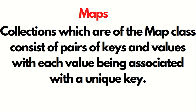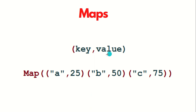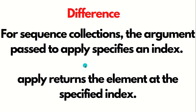Last is maps. Maps are a very common data structure. Maps contain collections of the map class which consist of pairs of keys and values, with each value being associated with a unique key. Maps are not a new thing — we have seen this maps concept in the case of Java, in the case of Hadoop. Key-value pairs are again a part of Scala. We have a key and we have a value — in this way it is defined as a map.